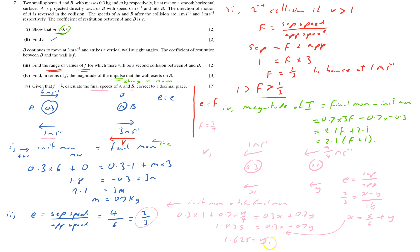Substituting into the momentum equation gives y equals 1.625, so to one decimal place y equals 1.6 m/s for B. Then x equals 2.458, so x equals 2.5 m/s for A. Important: always substitute the unrounded value — using 1.6 instead of 1.625 gives the wrong answer for x. Keep full accuracy throughout. That completes question seven.